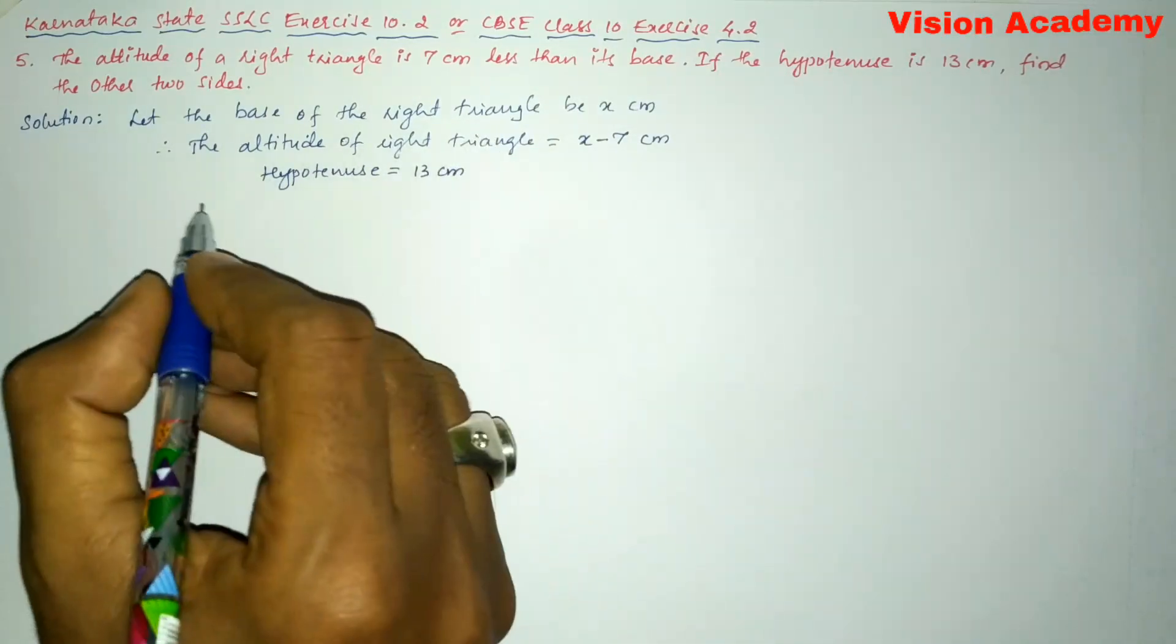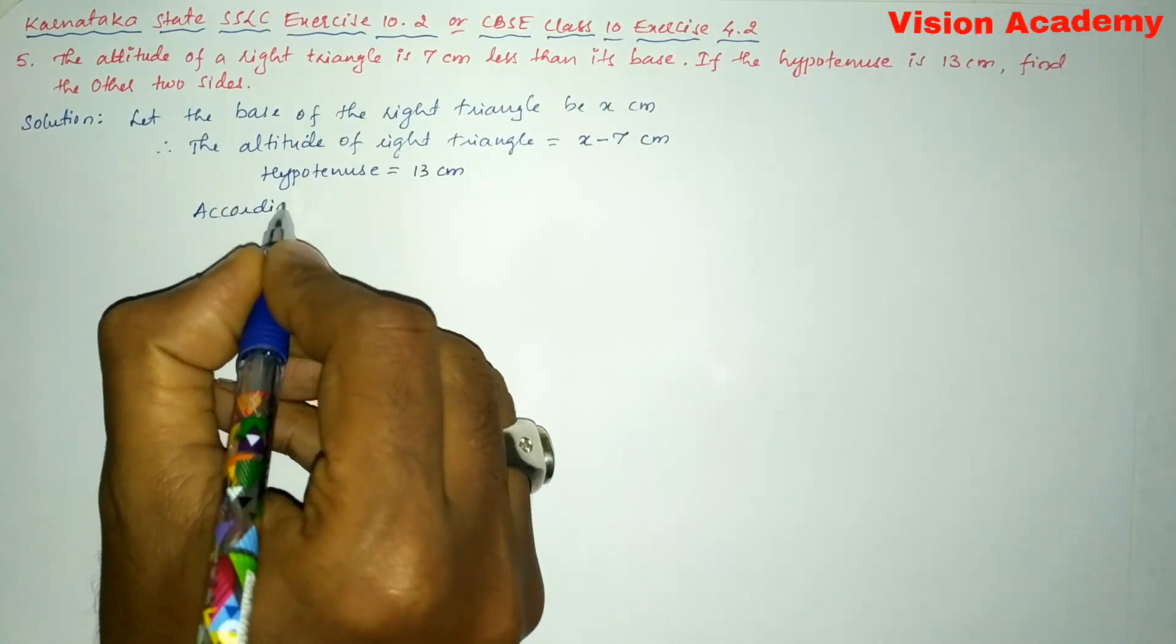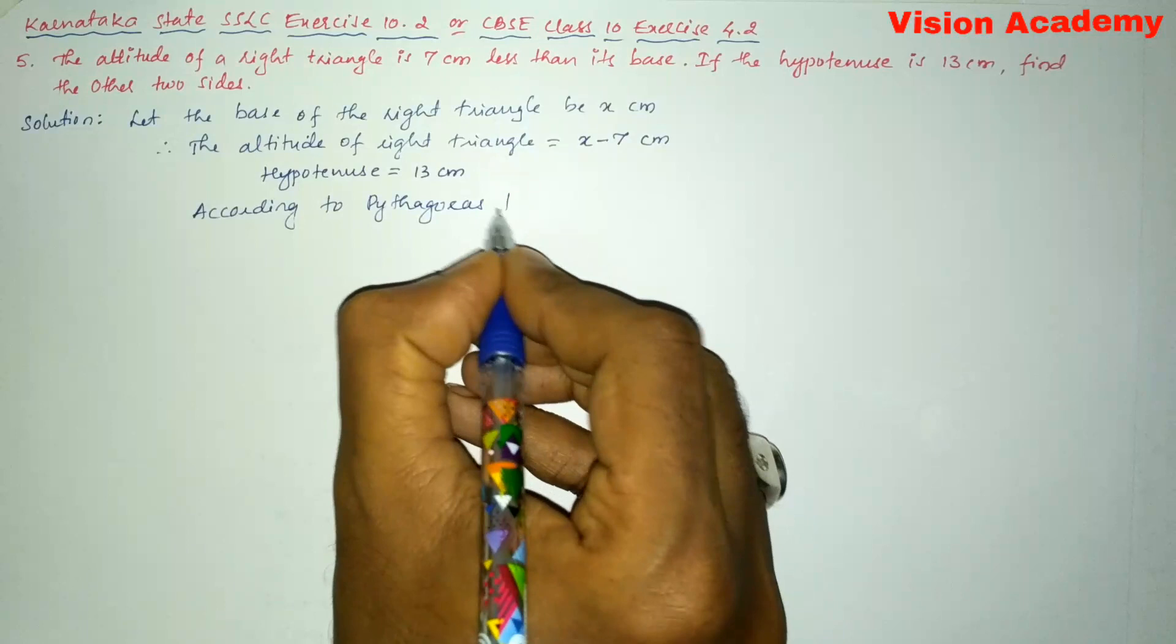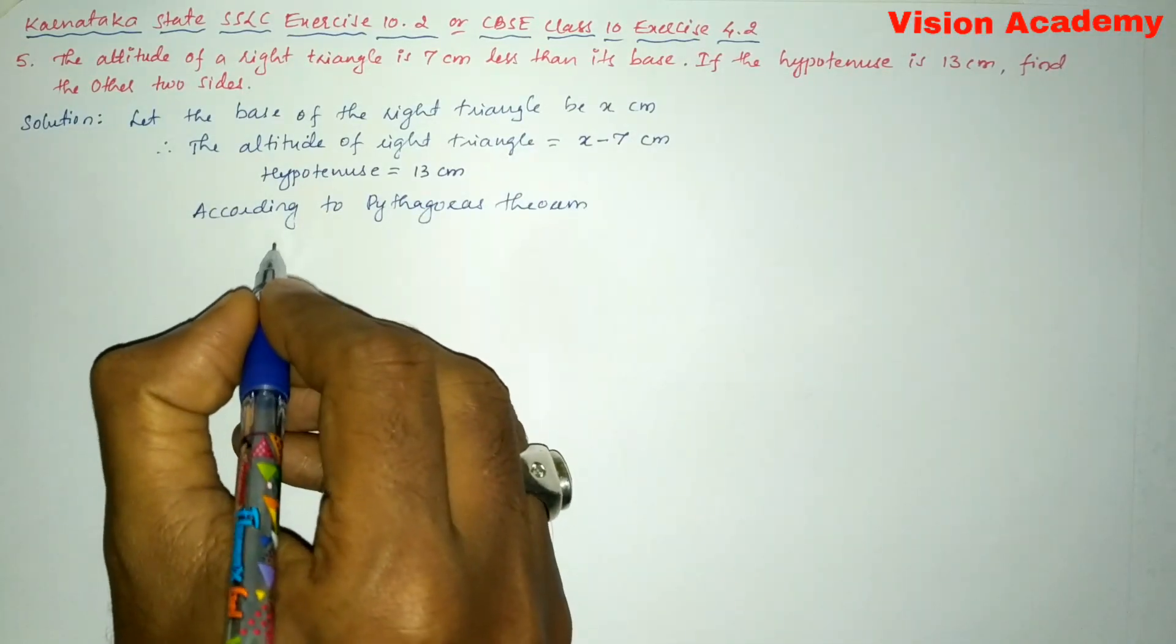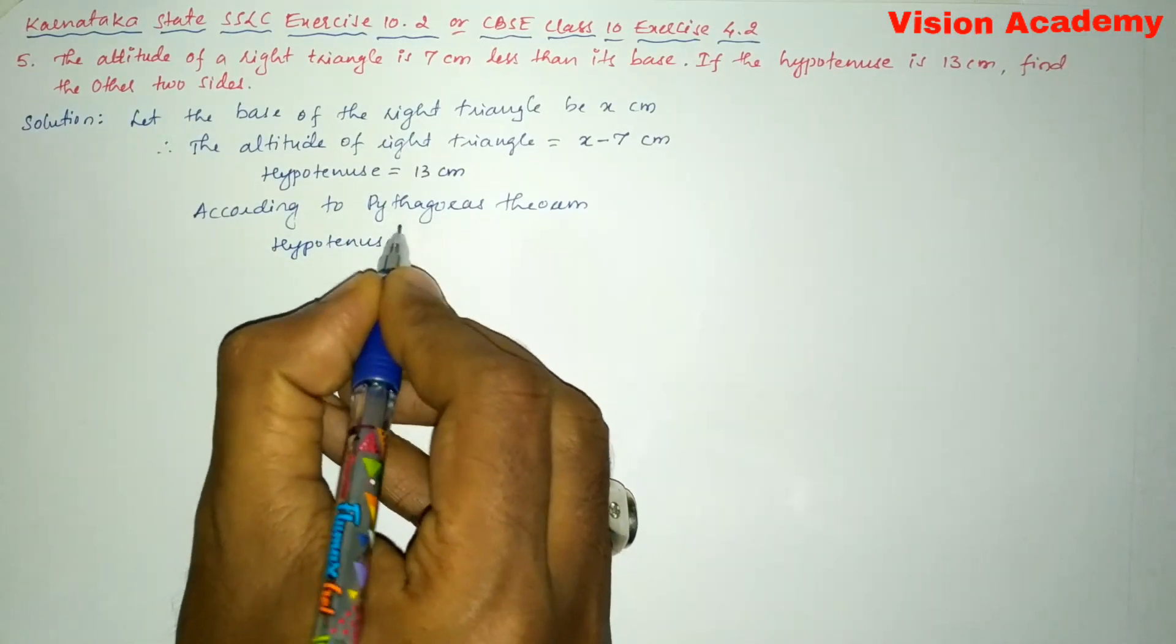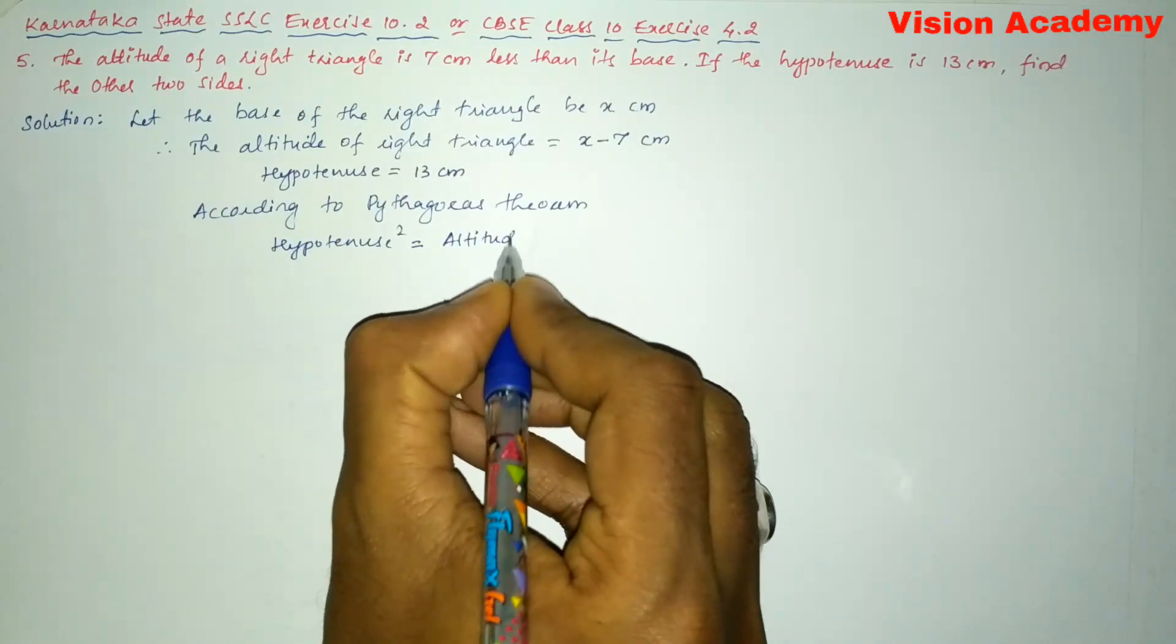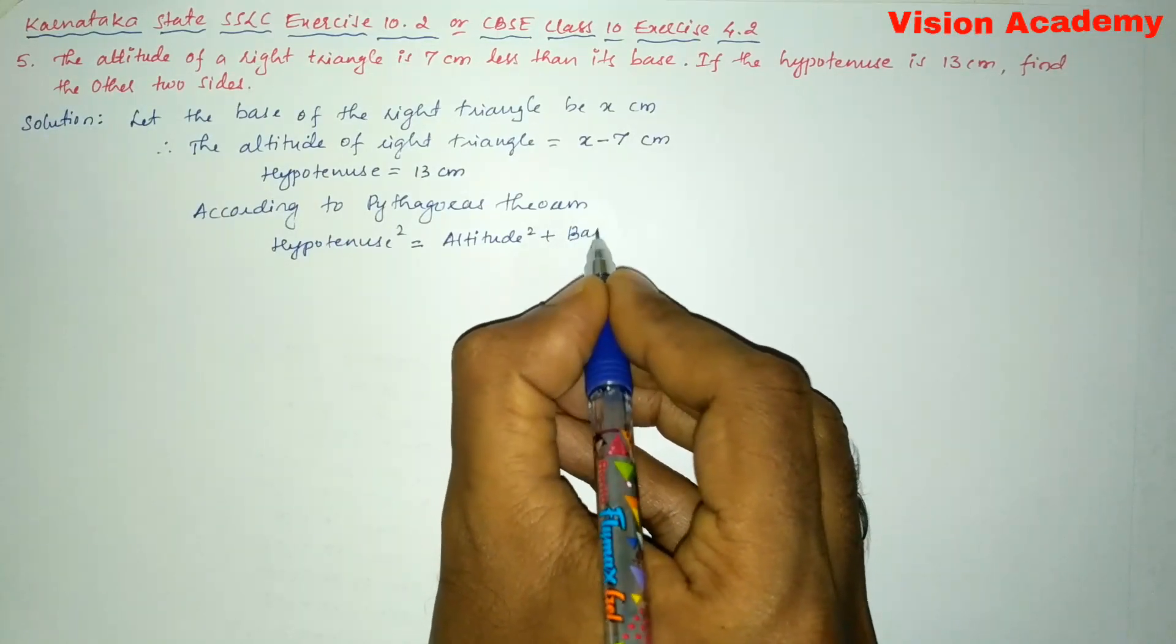Now we will use the Pythagoras theorem. According to Pythagoras theorem, we can write hypotenuse square hypotenuse square is equal to altitude square plus base square.